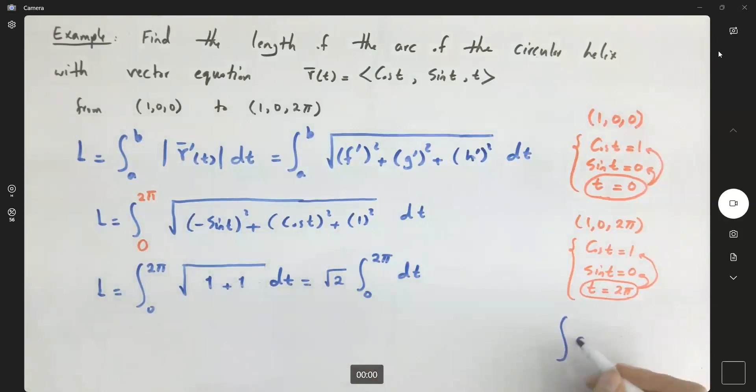Remember that the integral of dt is equal to t. So L, or the length of the arc, is equal to square root of 2, and t is bounded between 0 to 2π. So you have square root of 2 times (2π minus 0), or 2 square root of 2 times π.